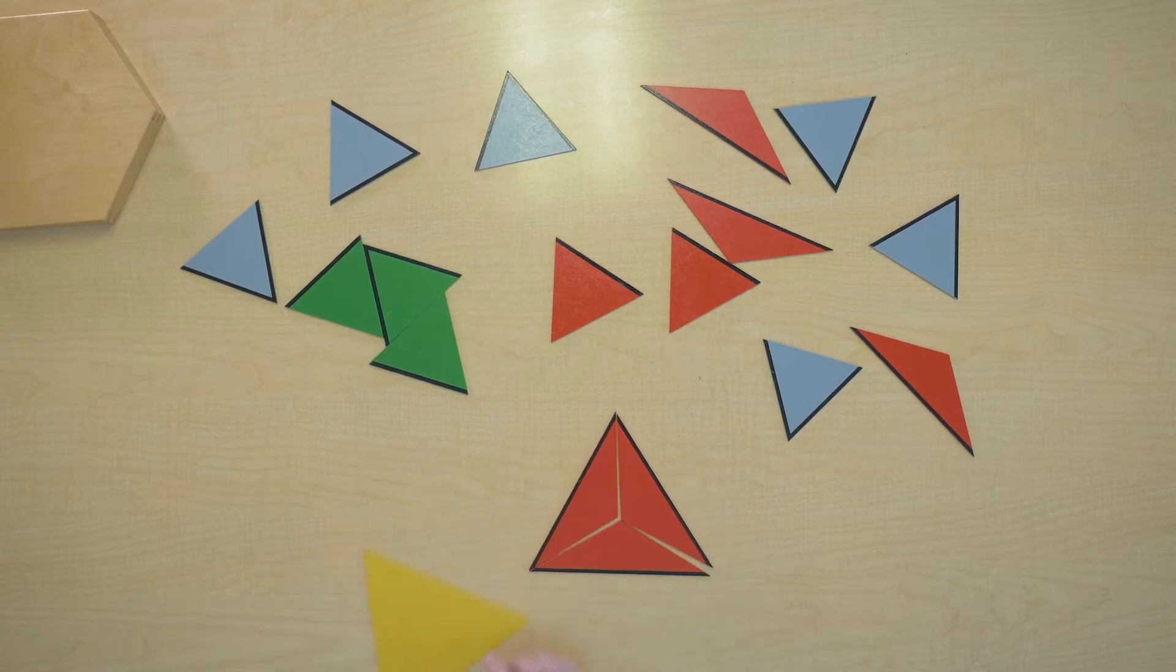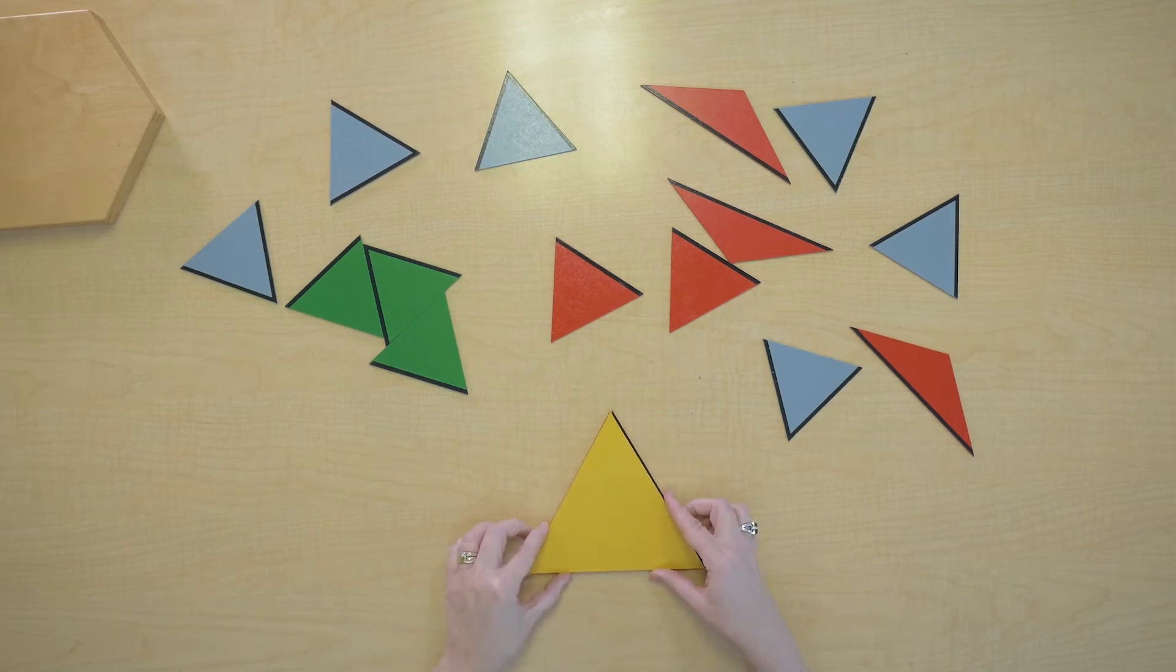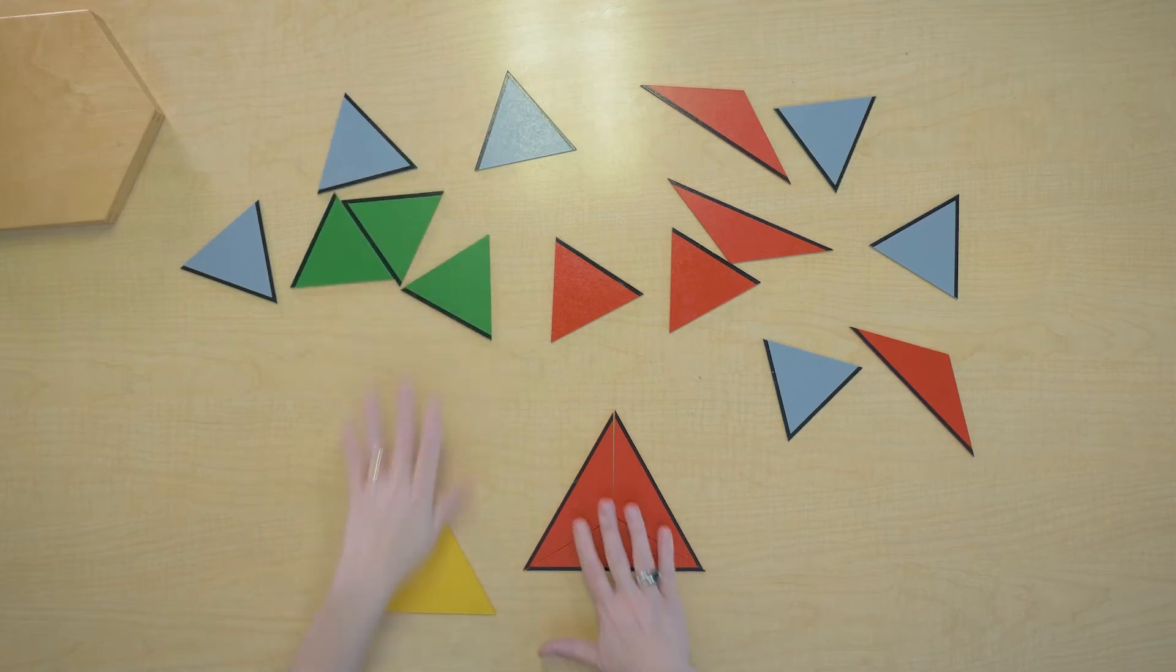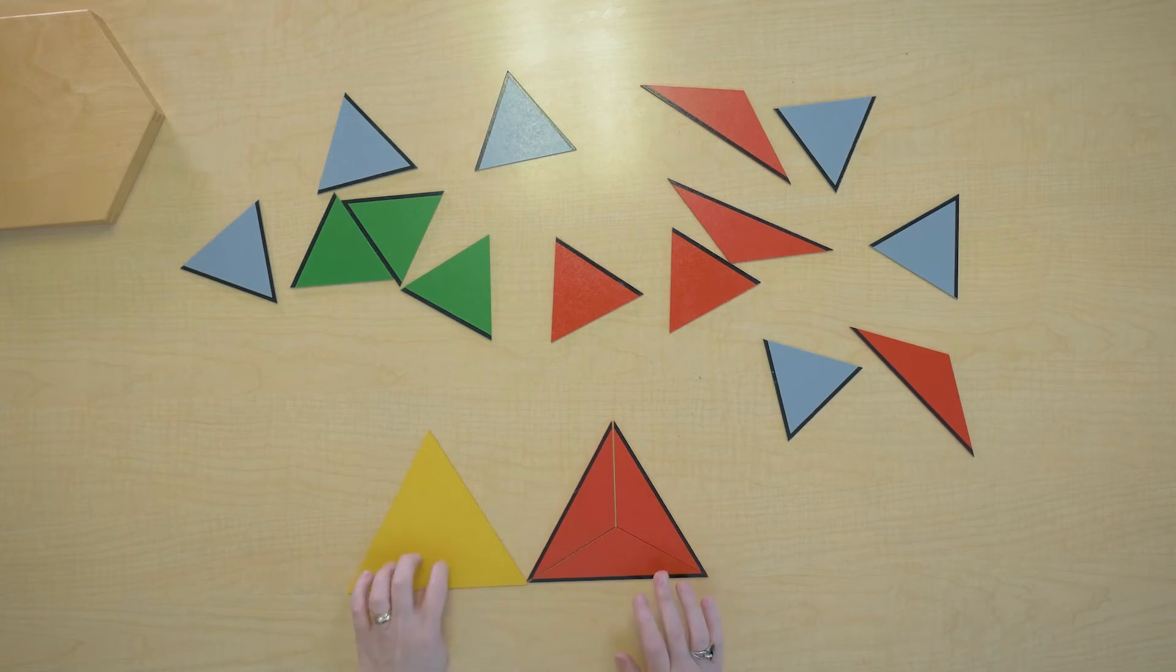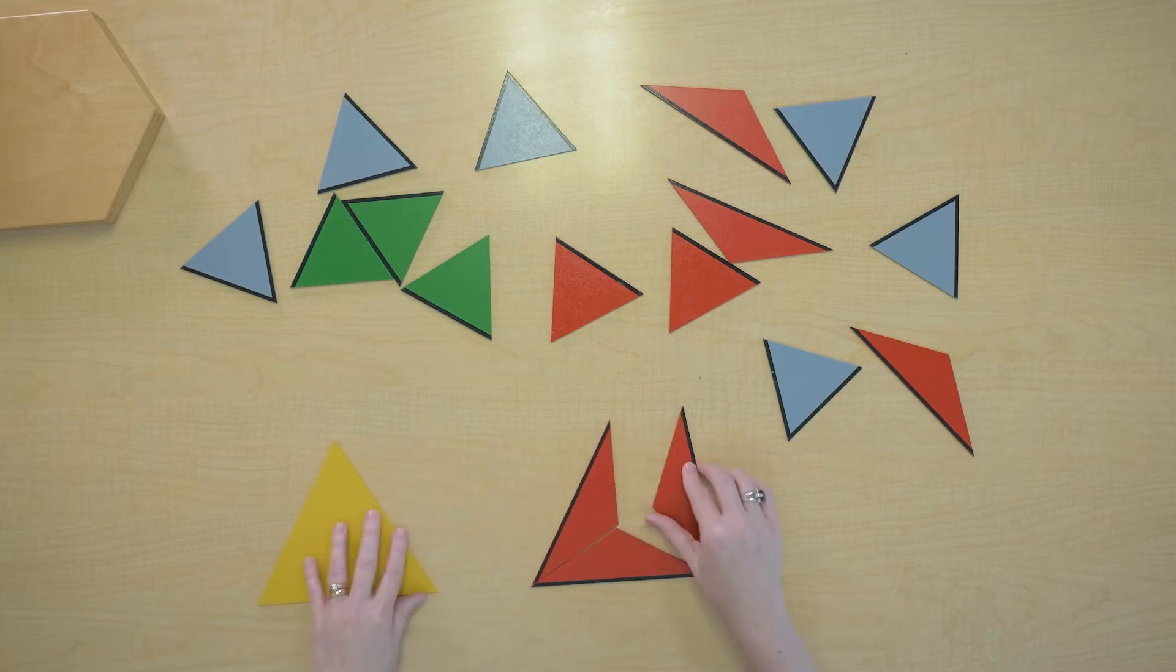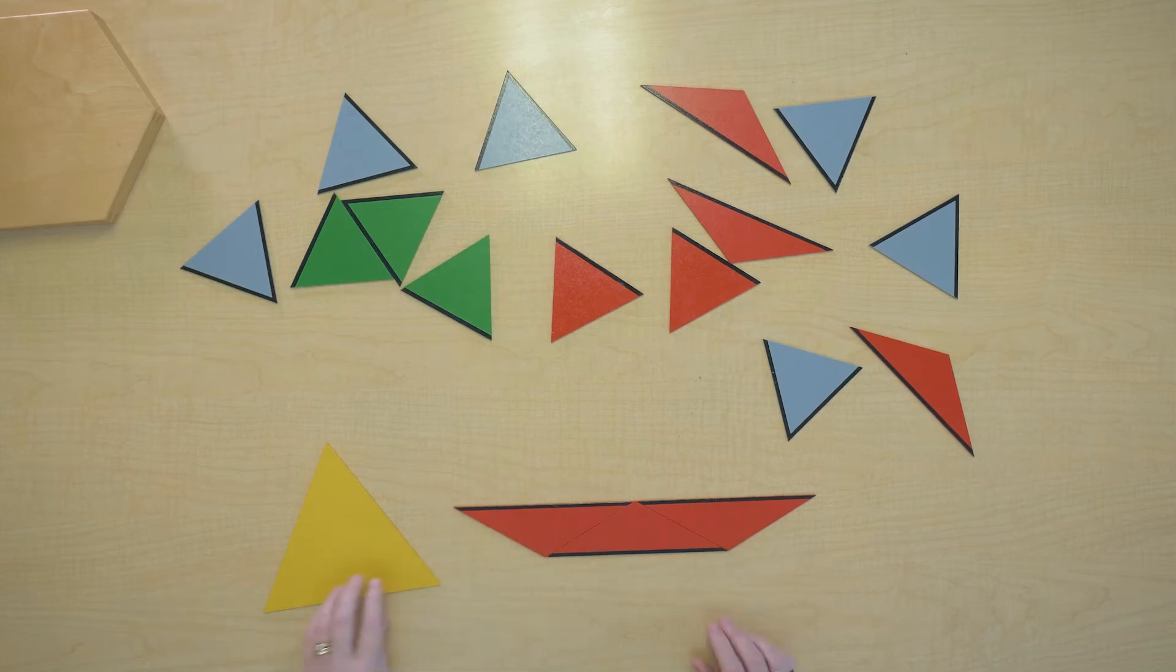This red triangle is equivalent to this yellow triangle. So anything I build out of these shapes is equivalent to the yellow triangle. So for example, I could do this and I've got an equivalent shape to this one.